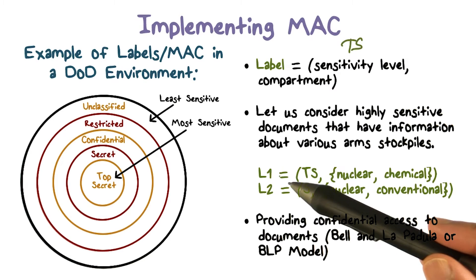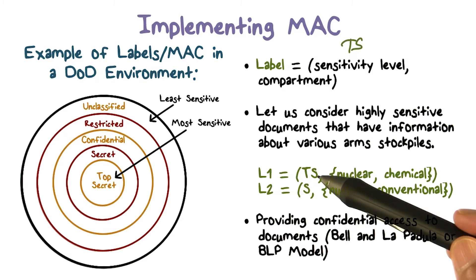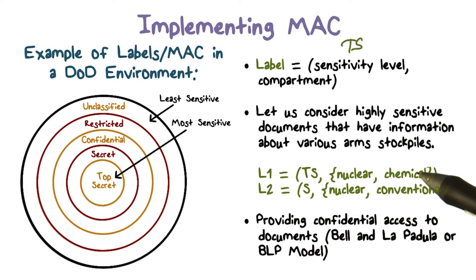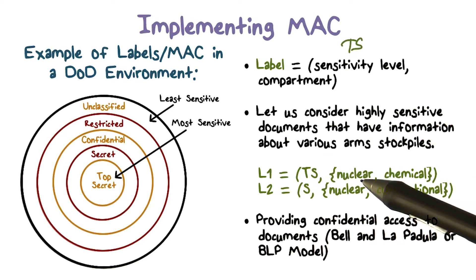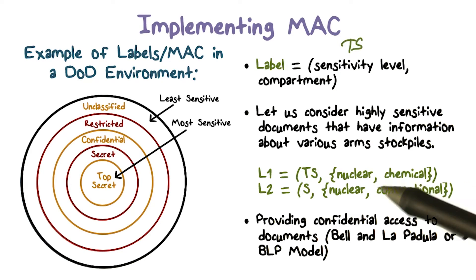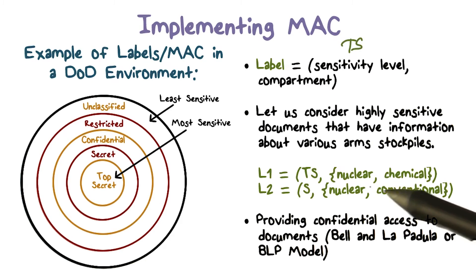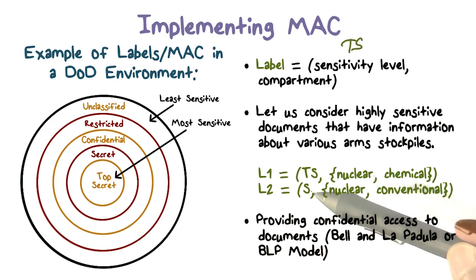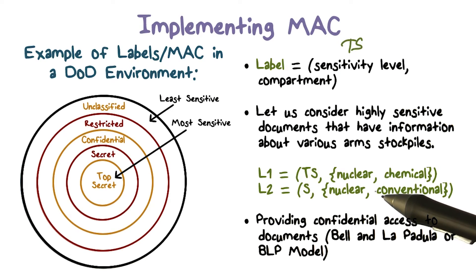So we have two labels here. L1: sensitivity level is TS (top secret), and the compartment is {nuclear, chemical}. Remember, this compartment looks like a set — the document may pertain to multiple topics, each one in the set describes that document. L2: sensitivity level is S (secret), and the compartment is {nuclear, conventional}.